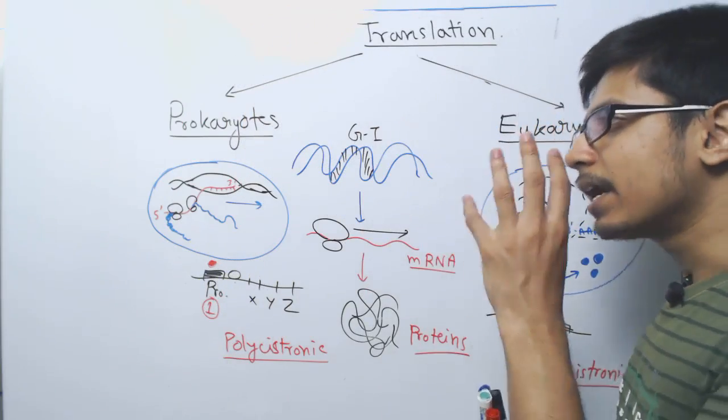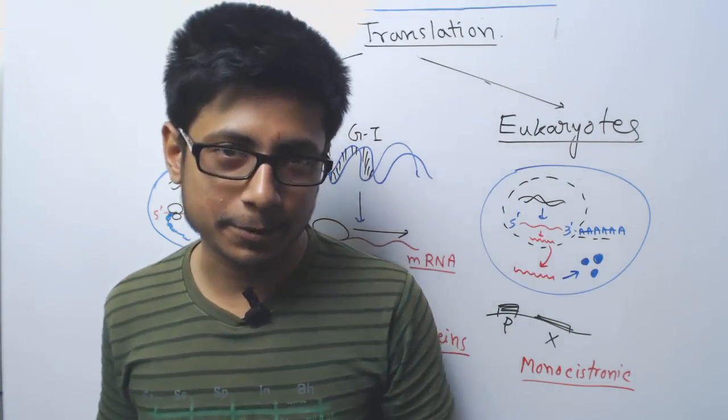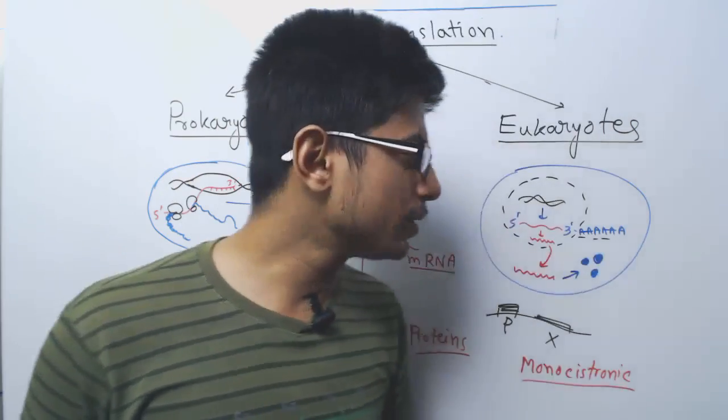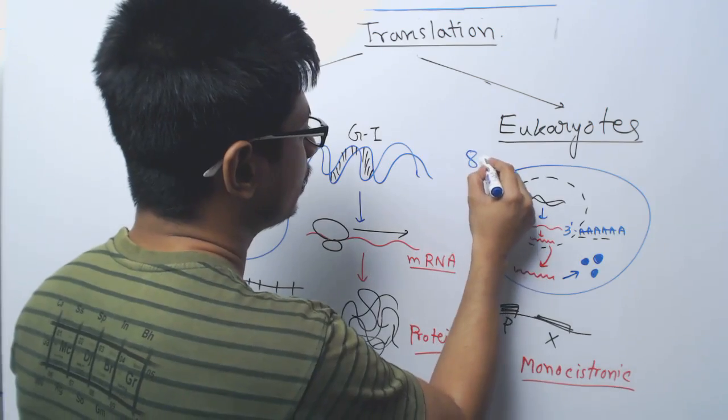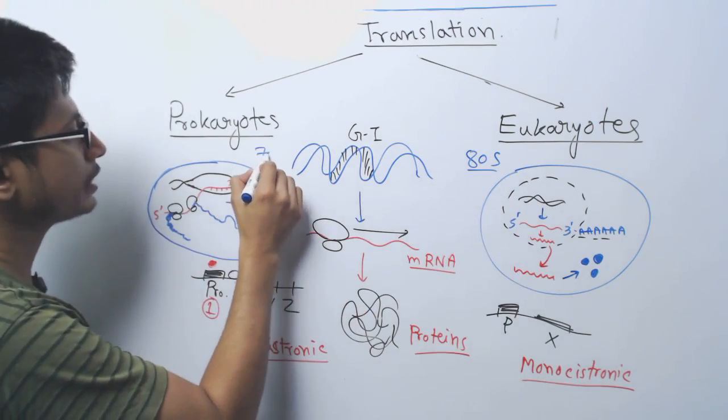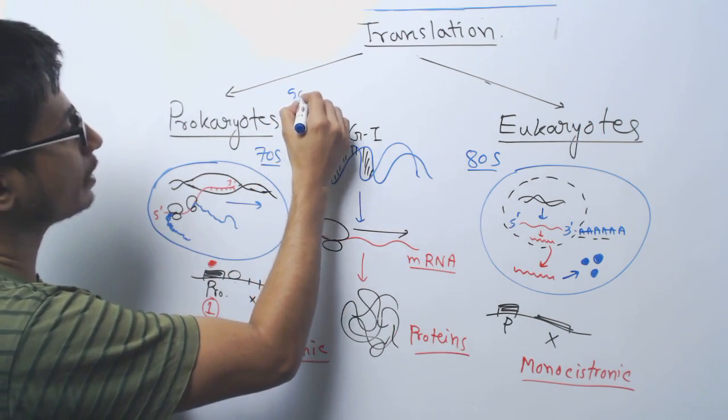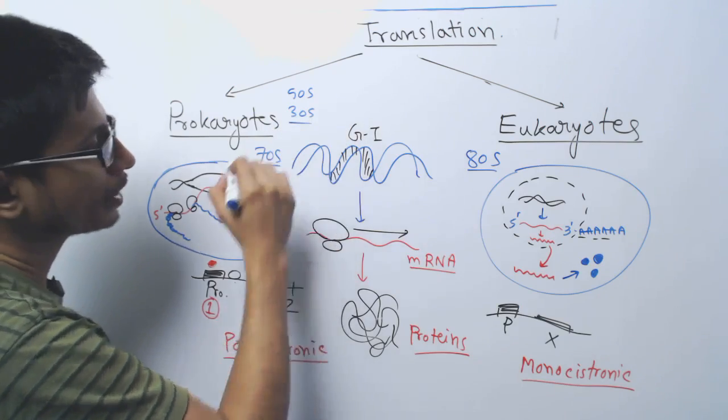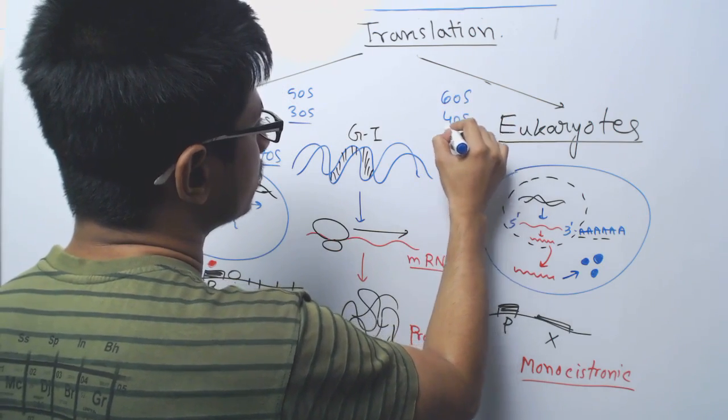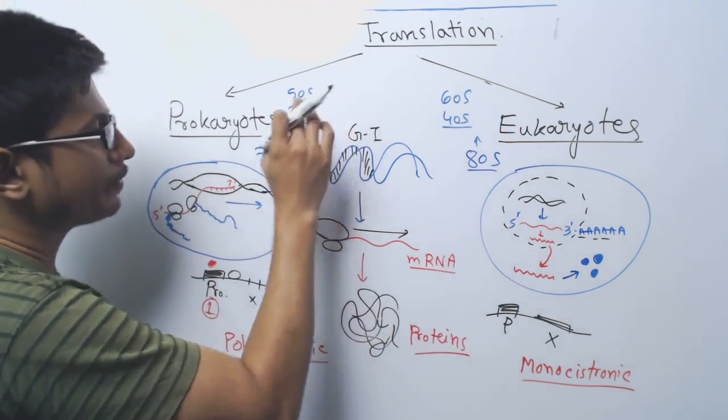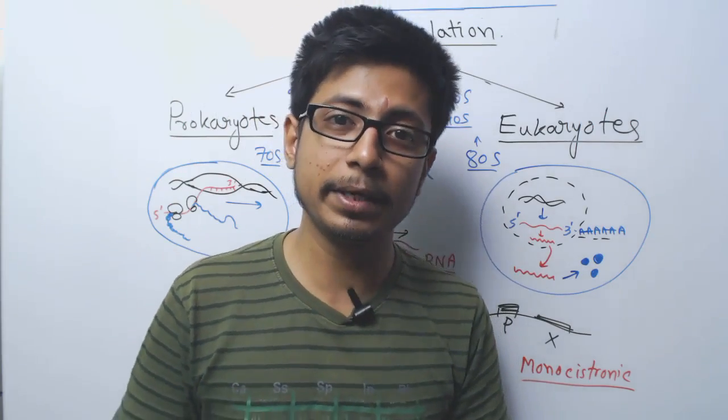The difference lies in other sides of this whole process. For example, the ribosome used by prokaryotes is known as 70S ribosome, but the ribosome used by eukaryotes are 80S ribosome. That is the first difference. Both the ribosomes have two subunits. The 70S ribosome has a 50S subunit and a 30S subunit. While eukaryotic ribosome has two subunits, 60S and 40S.